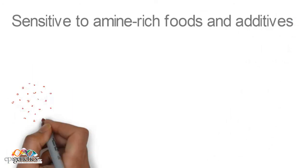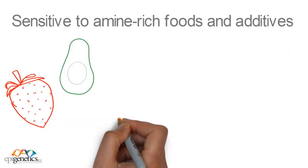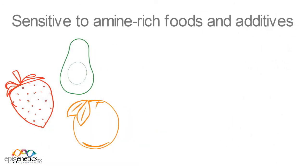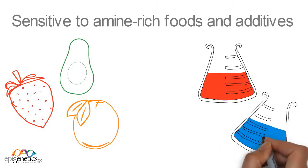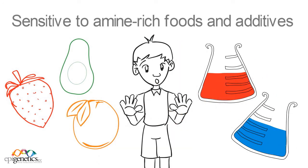He seems to be sensitive to amine-rich foods such as strawberries, avocados, citrus, and food additives such as MSG, red dyes, and blue dyes. Everything seems to give him a stomachache, yet he's always hungry.